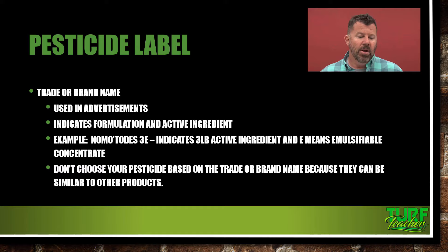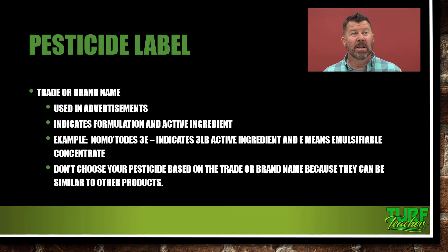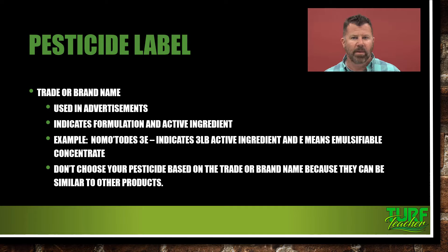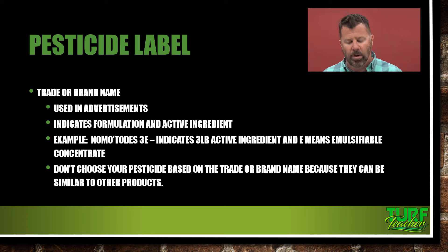Just know that Nematodes 3E is a fictional label. You're going to see a label just like this on the pesticide exam — probably twice, once on the ONT exam and once on the core exam. Don't choose your pesticide based on the trade name or brand name because they can be similar to other products. The active ingredient is glyphosate, and now that the patent has expired, a lot of other chemicals have come out using glyphosate — so it'll be cheaper using that off-brand name versus the brand name.